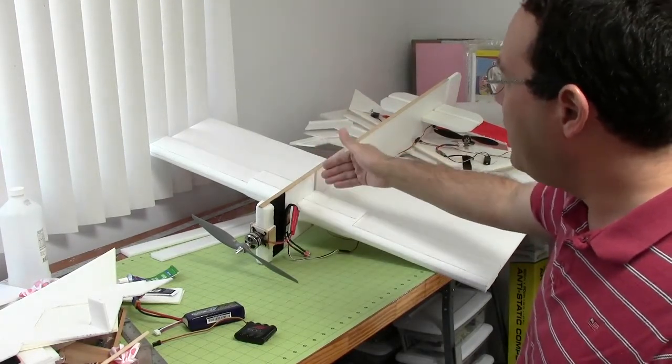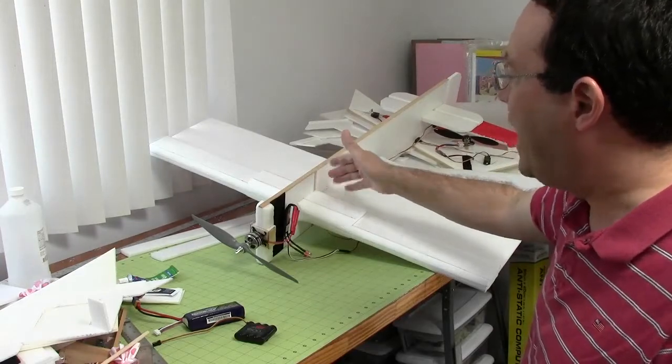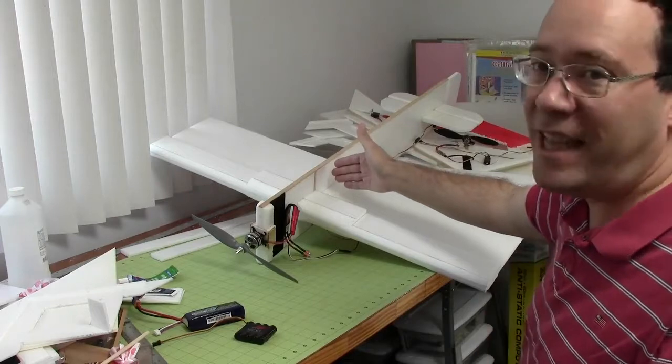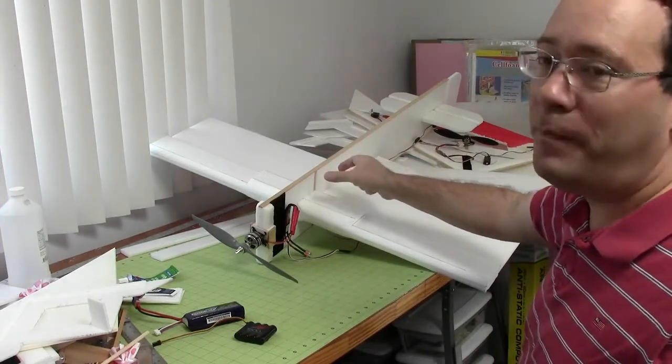Well, let me back up. The quarter-chord is five inches back. So then I do all the computations and it turns out the CG is going to be seven inches back, so I'm off by two inches.